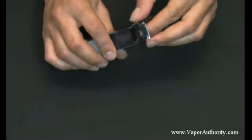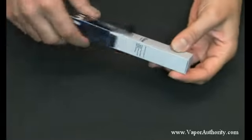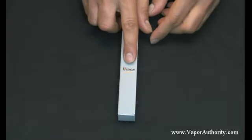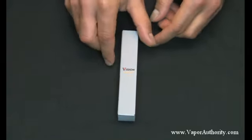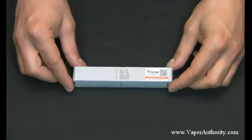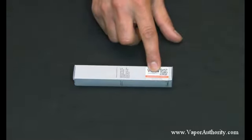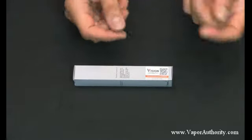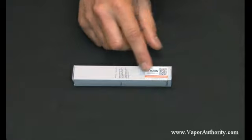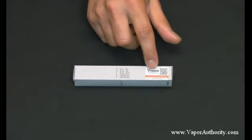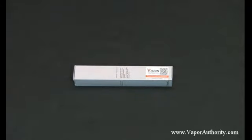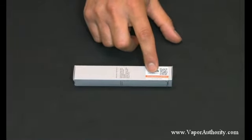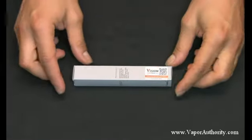When you open this up, you remove the plastic case, and inside is the cardboard case. On the front it has the Vision Spinner 2 logo, but the most important part is the side with the authenticity label. Beneath the label it says Scratch Me. You scratch it off and get a code. You go on the Vision e-cig website to verify this is an authentic Vision Spinner 2 battery.